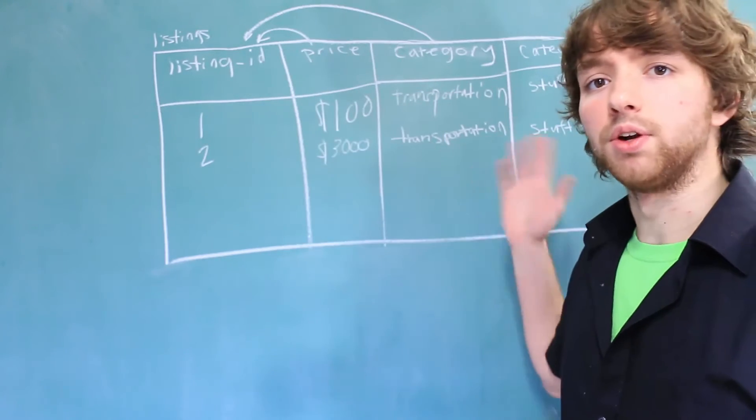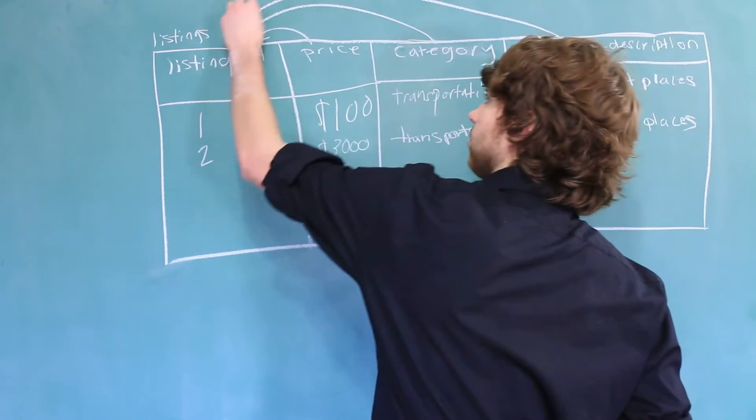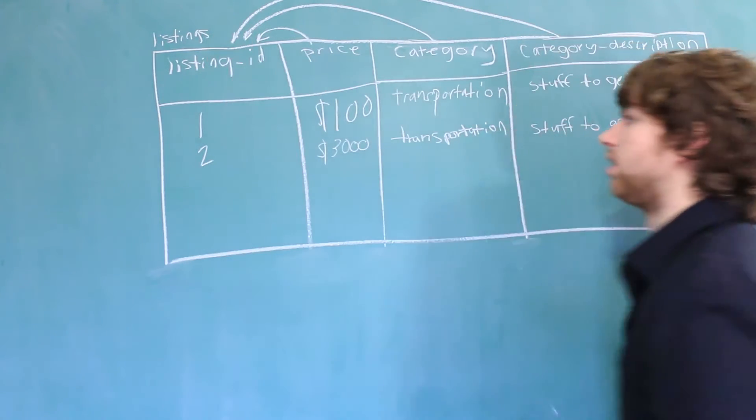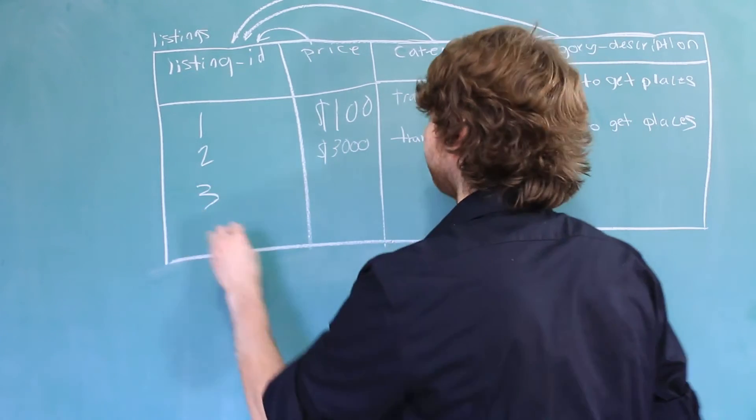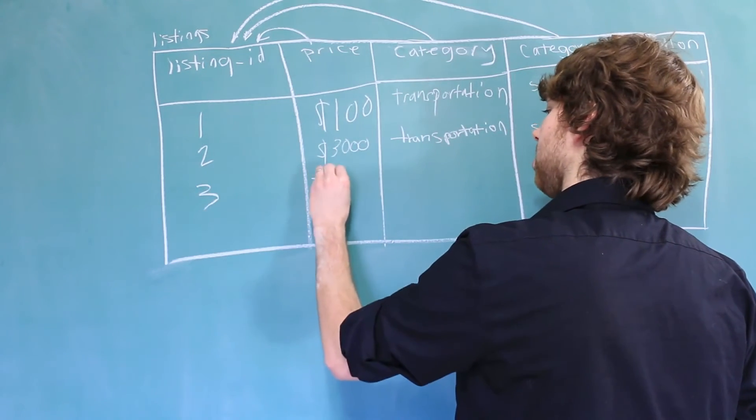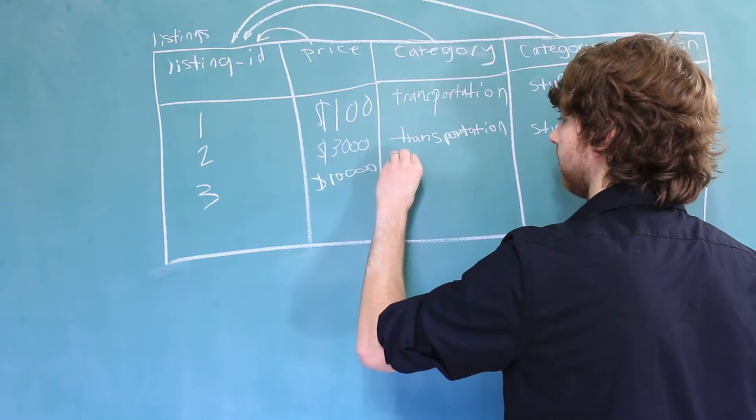Category description, believe it or not, actually depends on listing 2. That's because if you were to change the listing ID. Let's say we had another item in here. And it cost $10,000. And the category is toys.